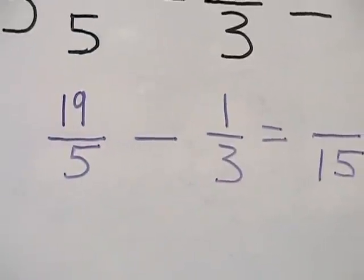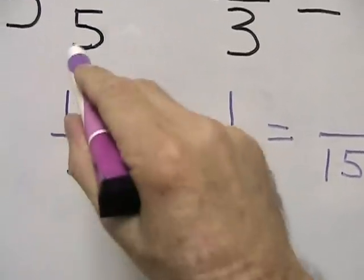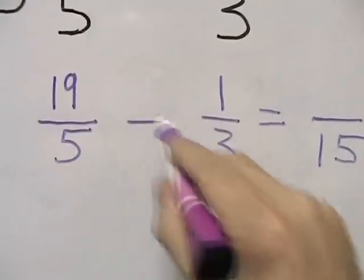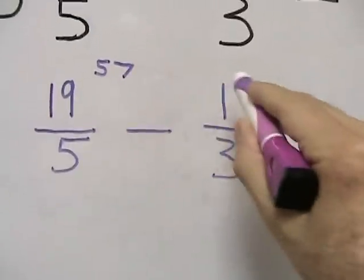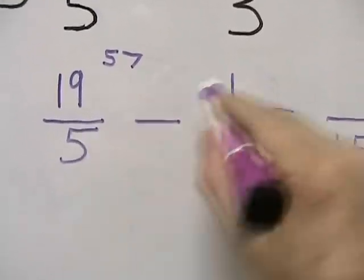Next, we're going to cross multiply, starting at the top left. We take our 19, multiply it by 3, to get 57. Next we take our 1, multiply it by 5, to get 5.